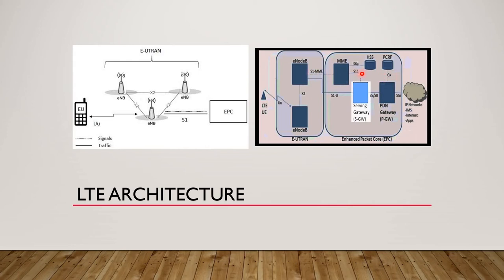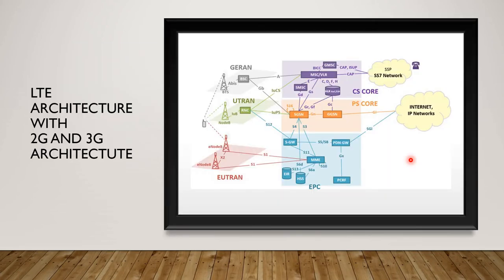In the diagram, the dotted lines — S1-MME, S6A, S11, GX — represent signaling interfaces where control plane signaling happens, while the user plane is where actual traffic flows. Signaling is very important in wireless communication: we need to know the subscriber's location, the services subscribed to, and barring information. Prior to establishing traffic, it's important to establish the control plane first.